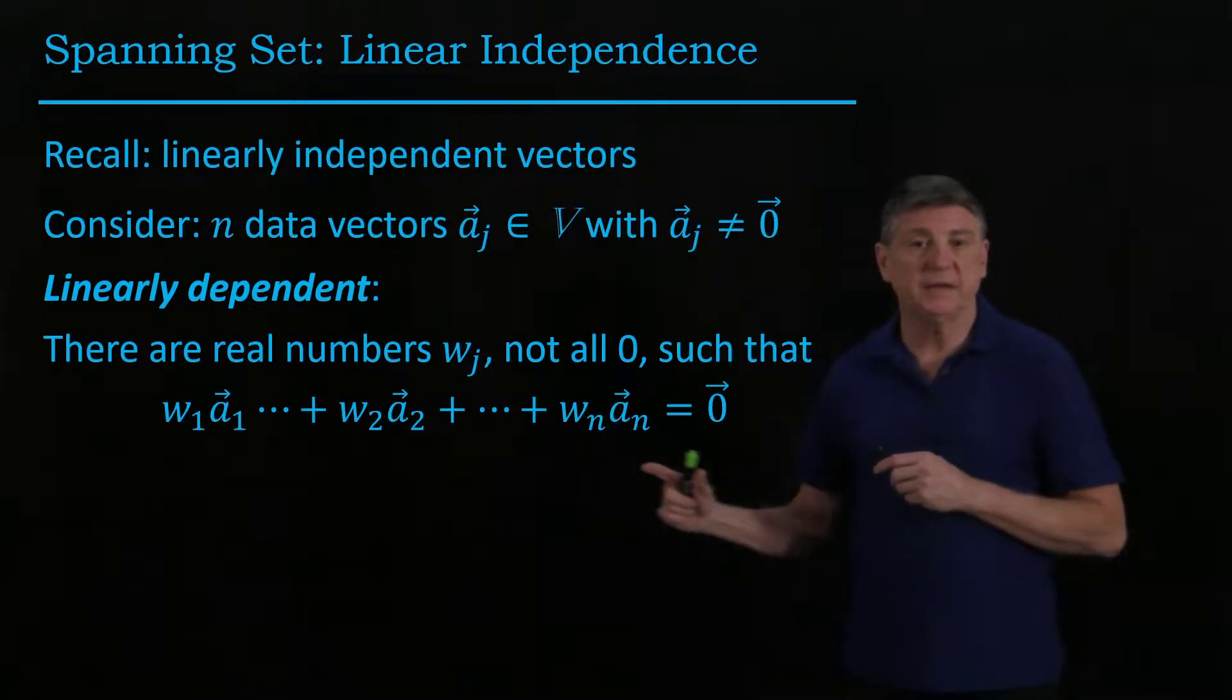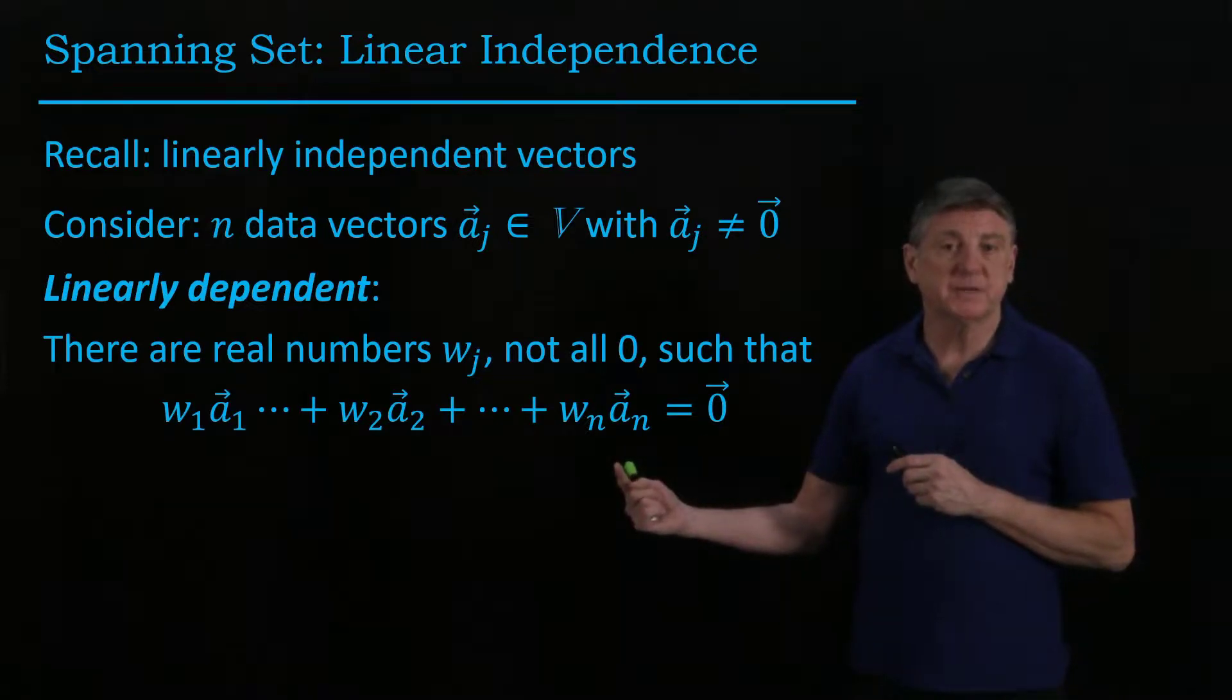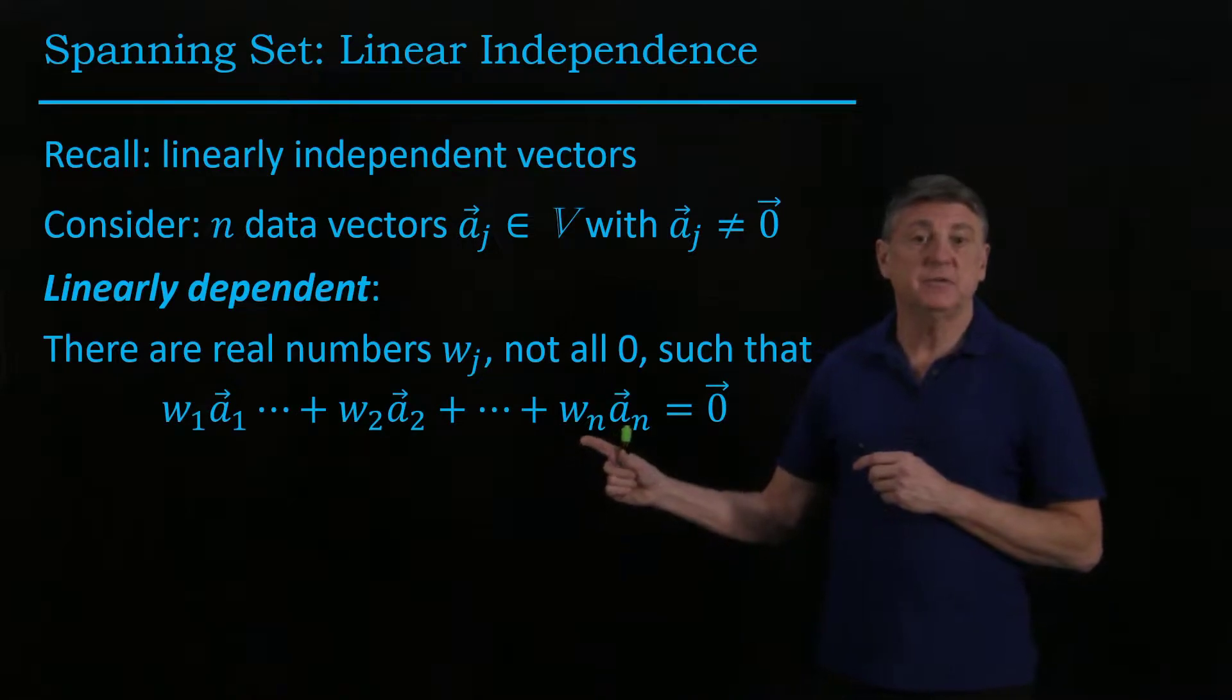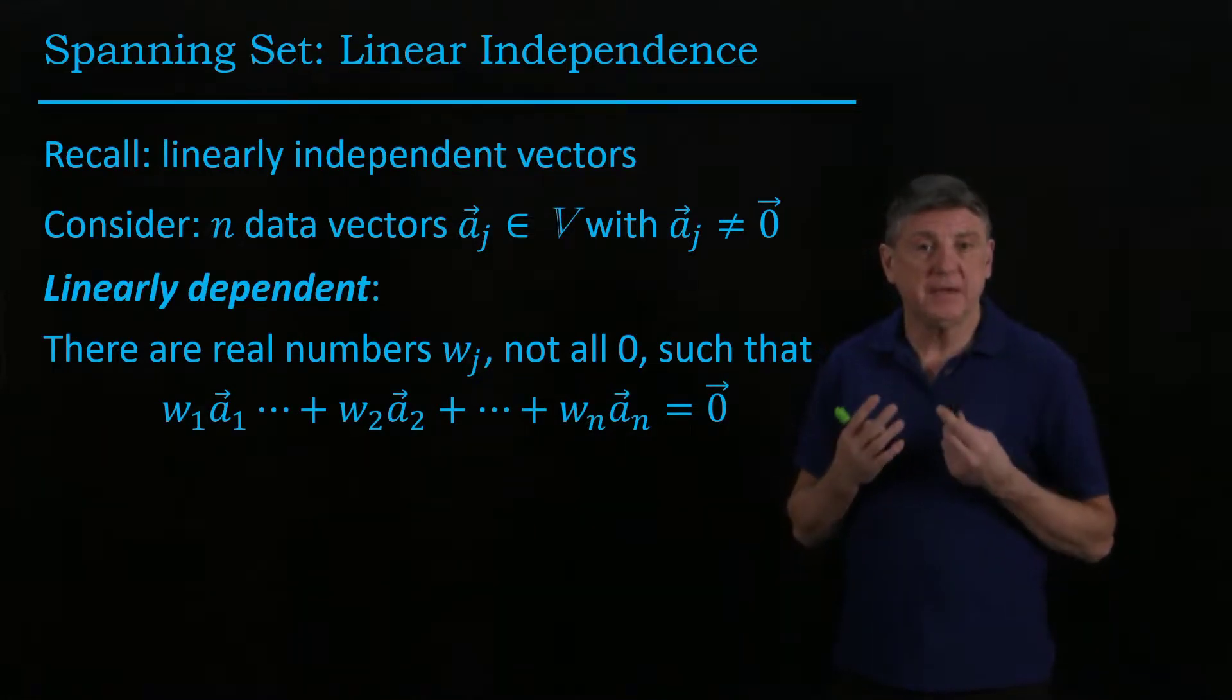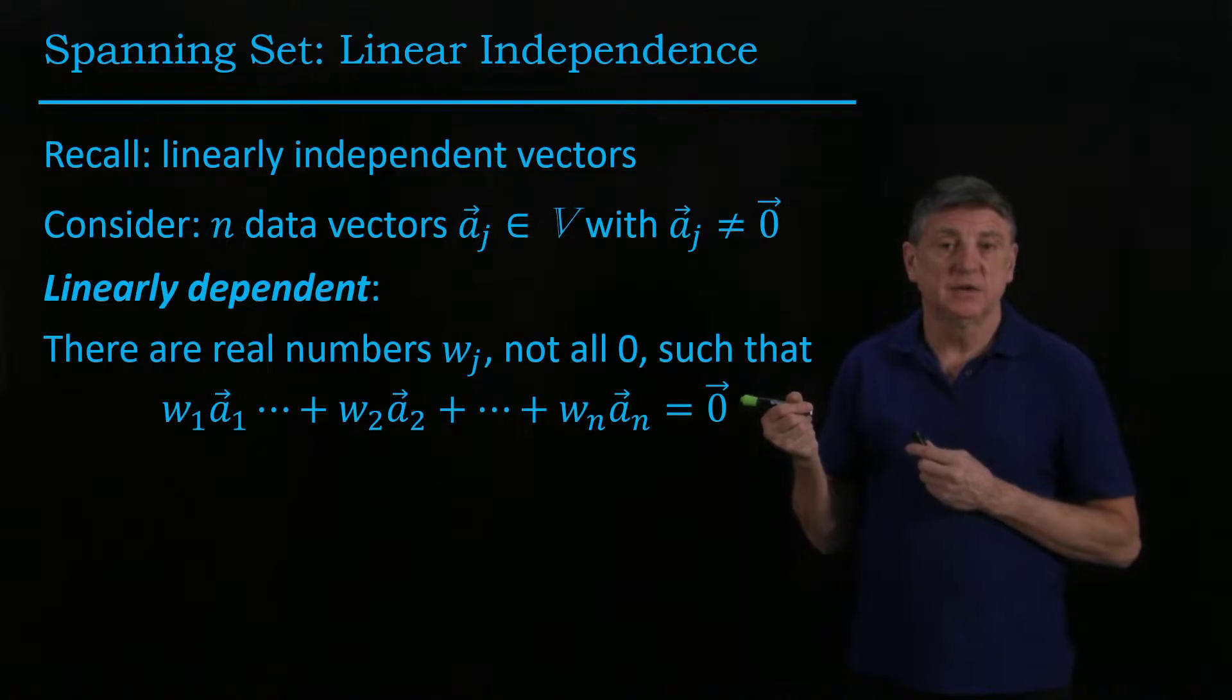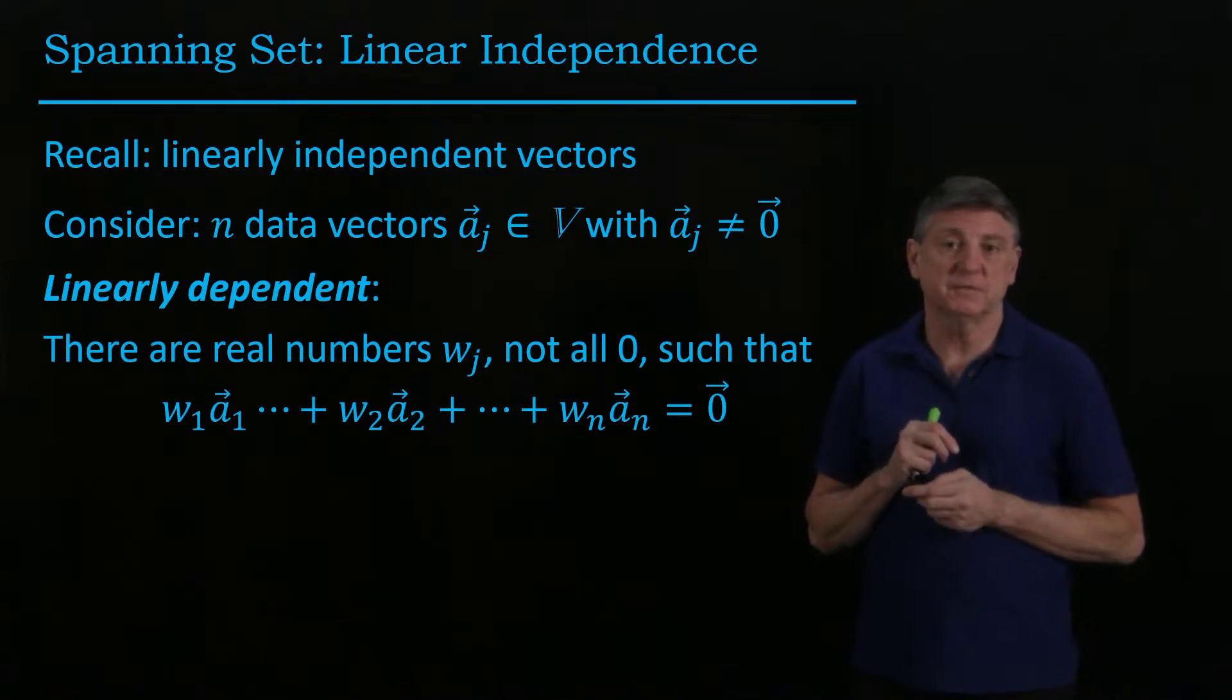We could move w_n to the other side and express vector ā_n in terms of the others by dividing through by minus w_n. Linear dependence means we can create the zero vector as a non-trivial combination, which means we can represent some vectors in terms of others.